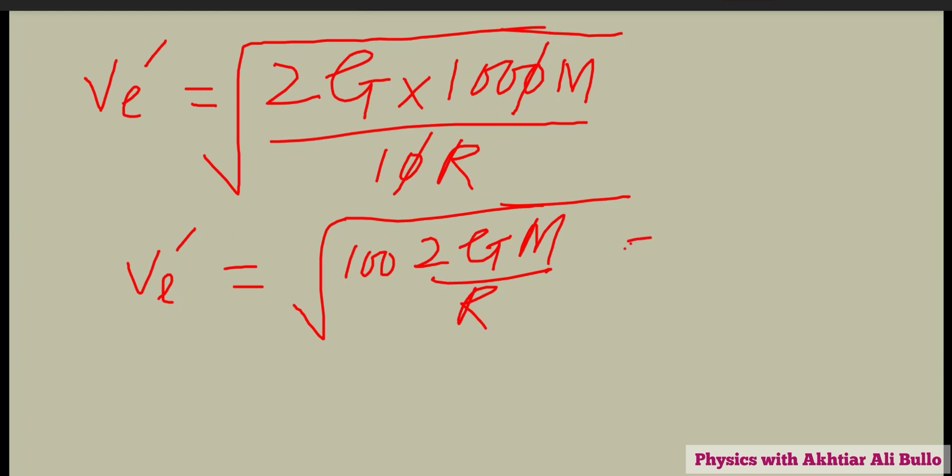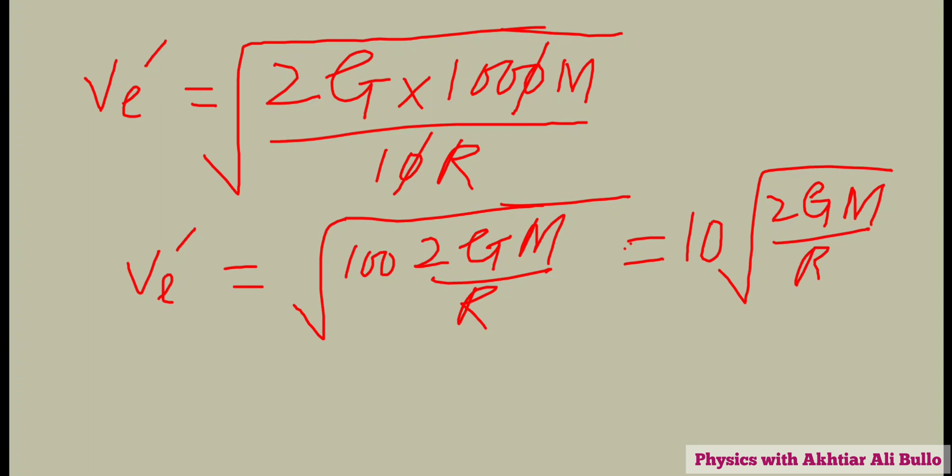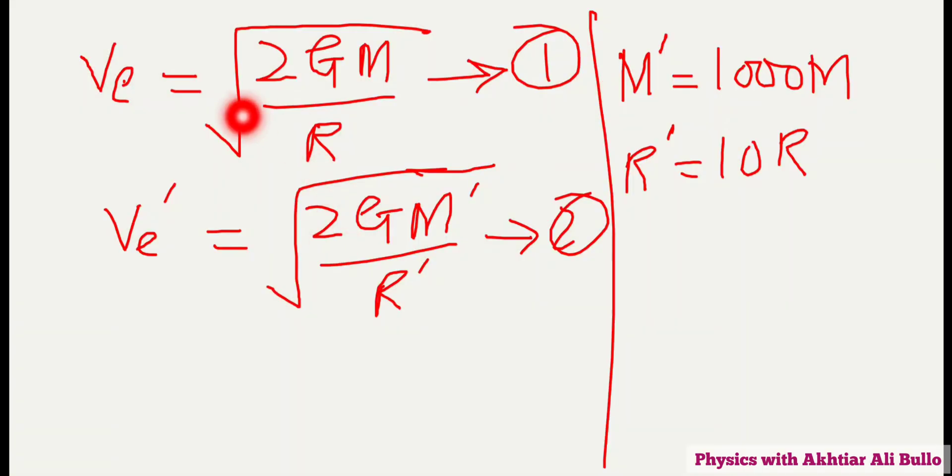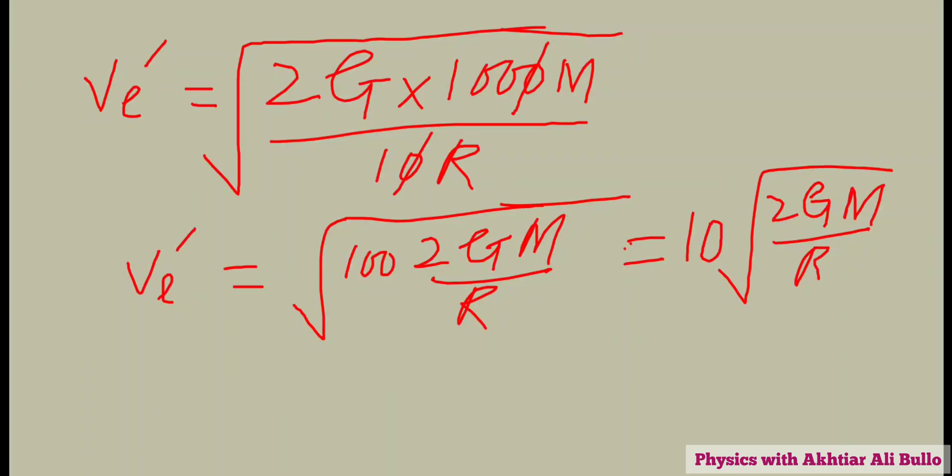The square root of 100 is 10, so this becomes 10 times square root of 2GM upon R. Therefore, ve dash will be equal to 10 times ve.